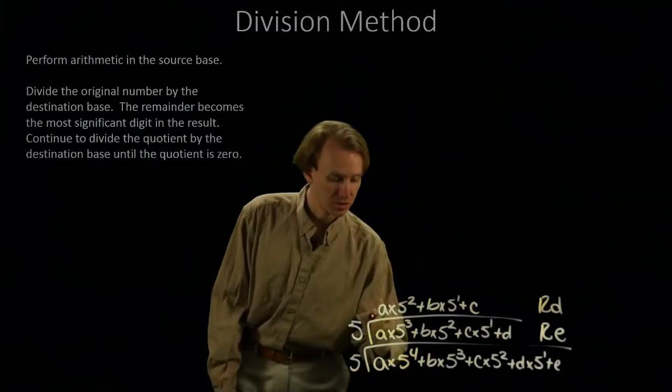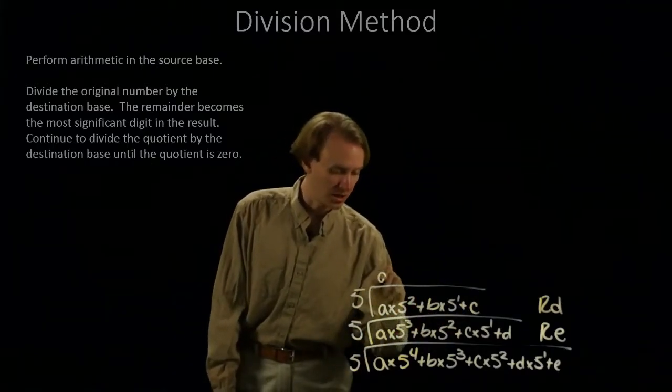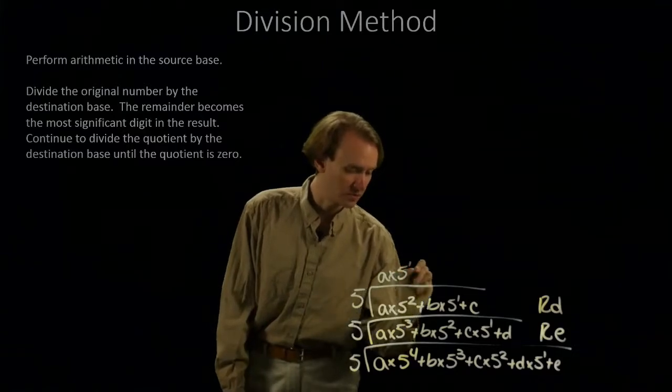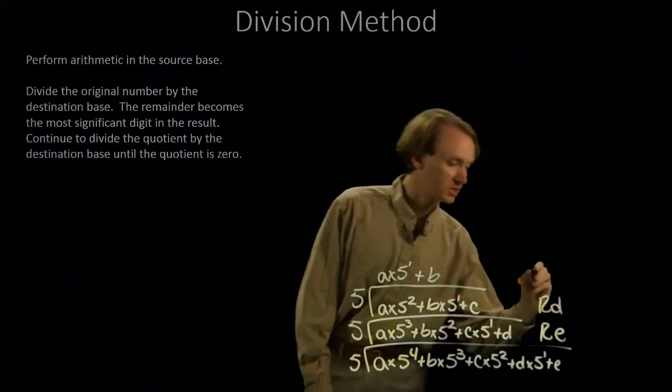And I have a new quotient. I can work with this again. So, I'll get a times 5 to the 1st plus b with a remainder of c.